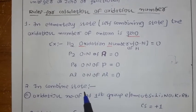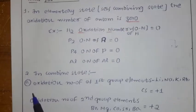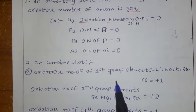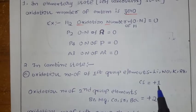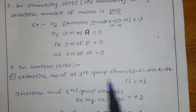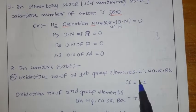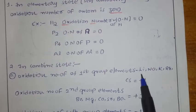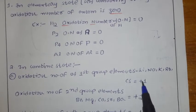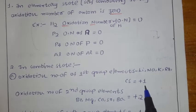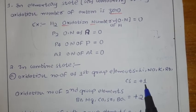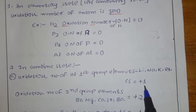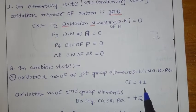The second rule: in combined state, the oxidation number of first group elements equals plus 1. The first group elements are lithium, sodium, potassium, rubidium, and cesium. Their general oxidation number is plus 1. This is because they have one extra electron; if they lose this electron, they get the octet configuration.